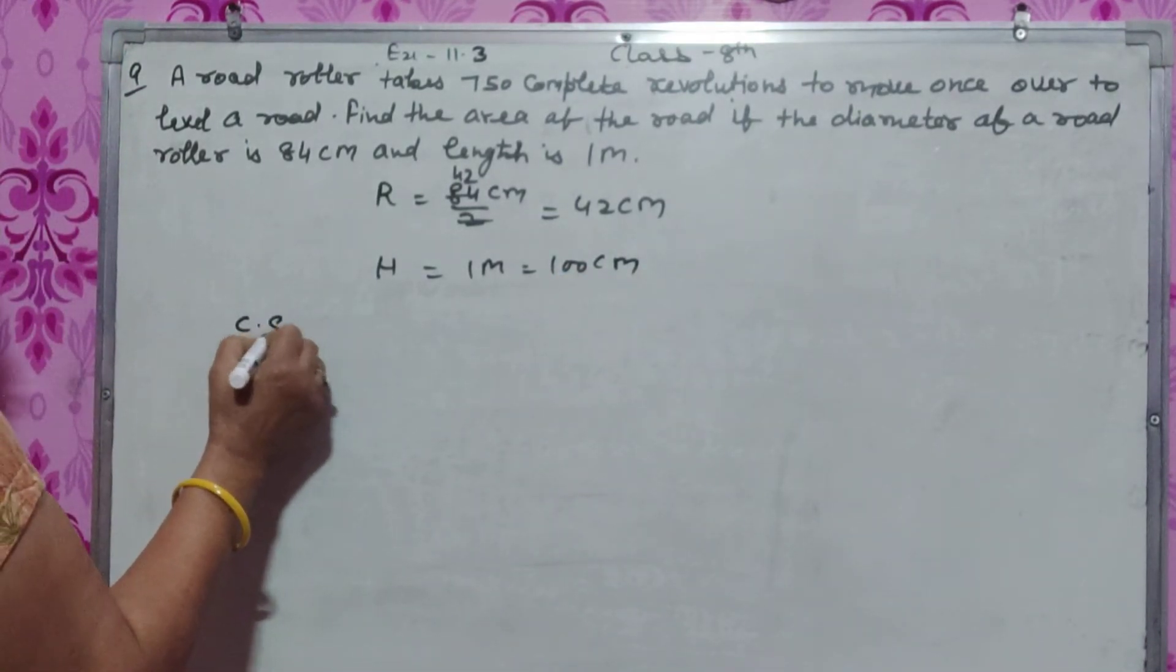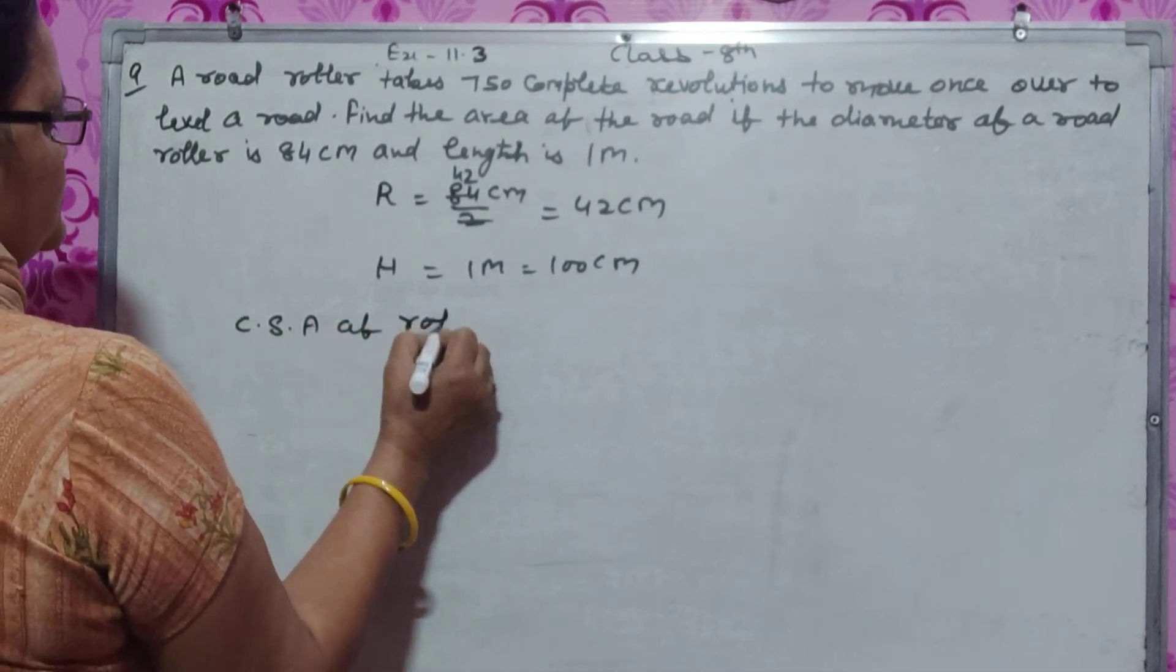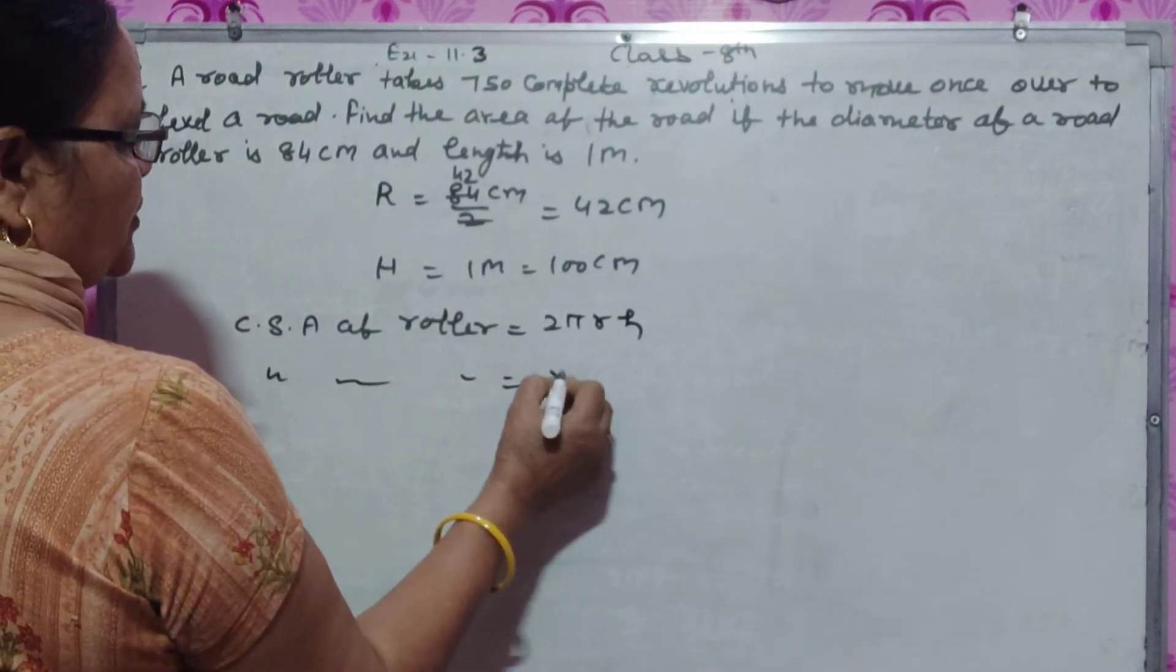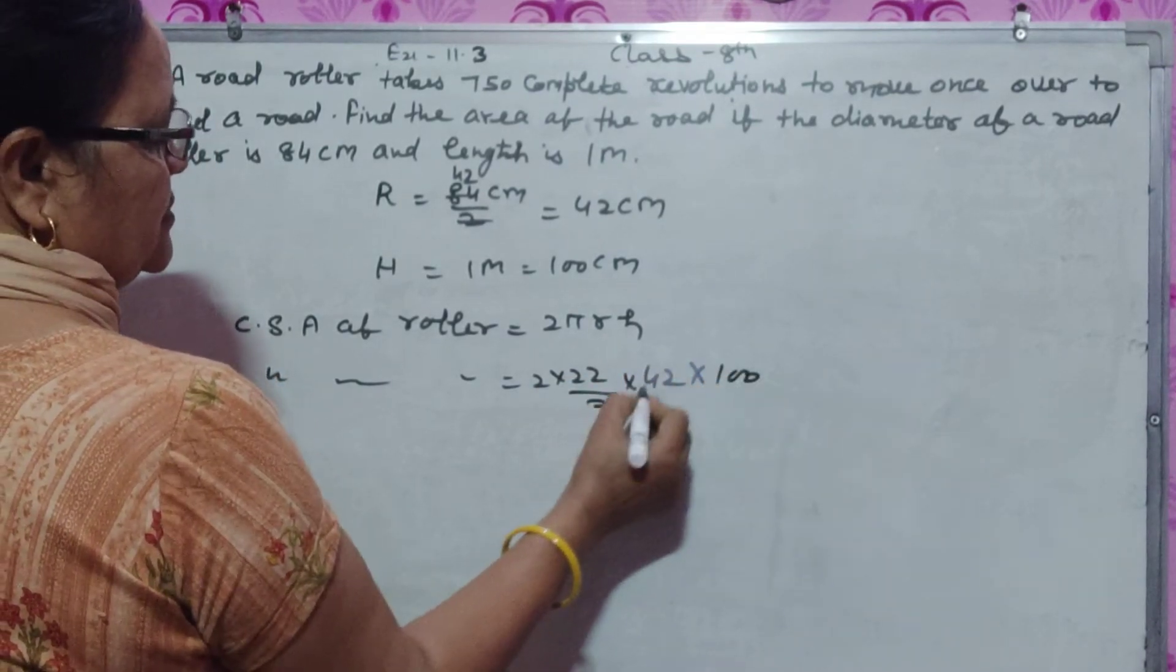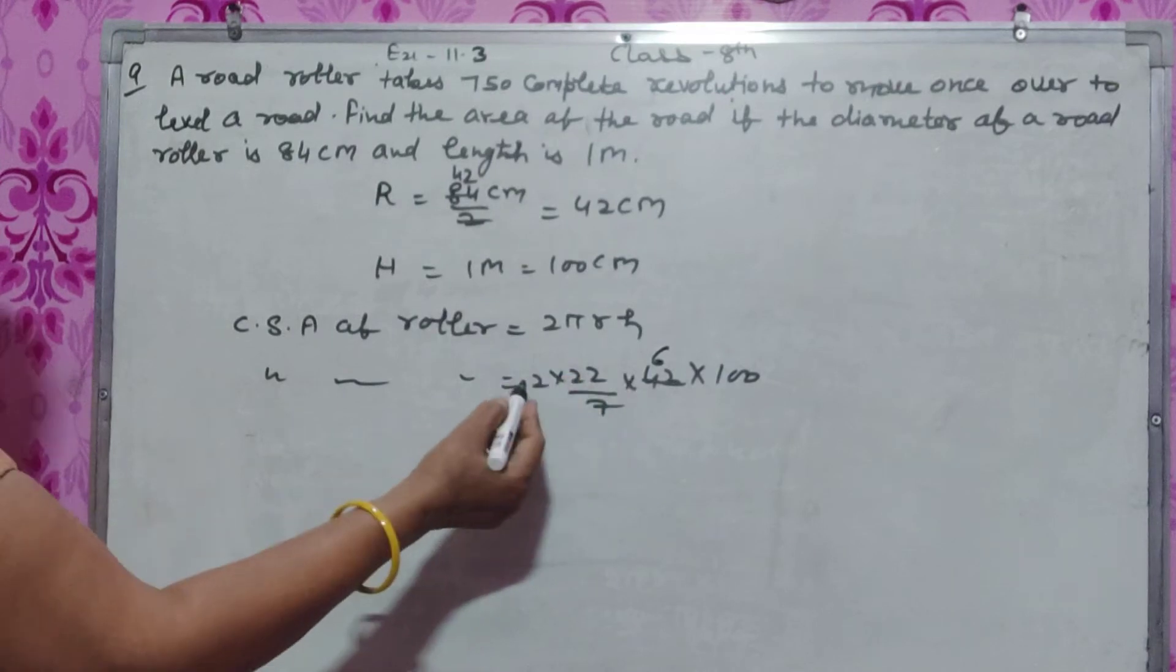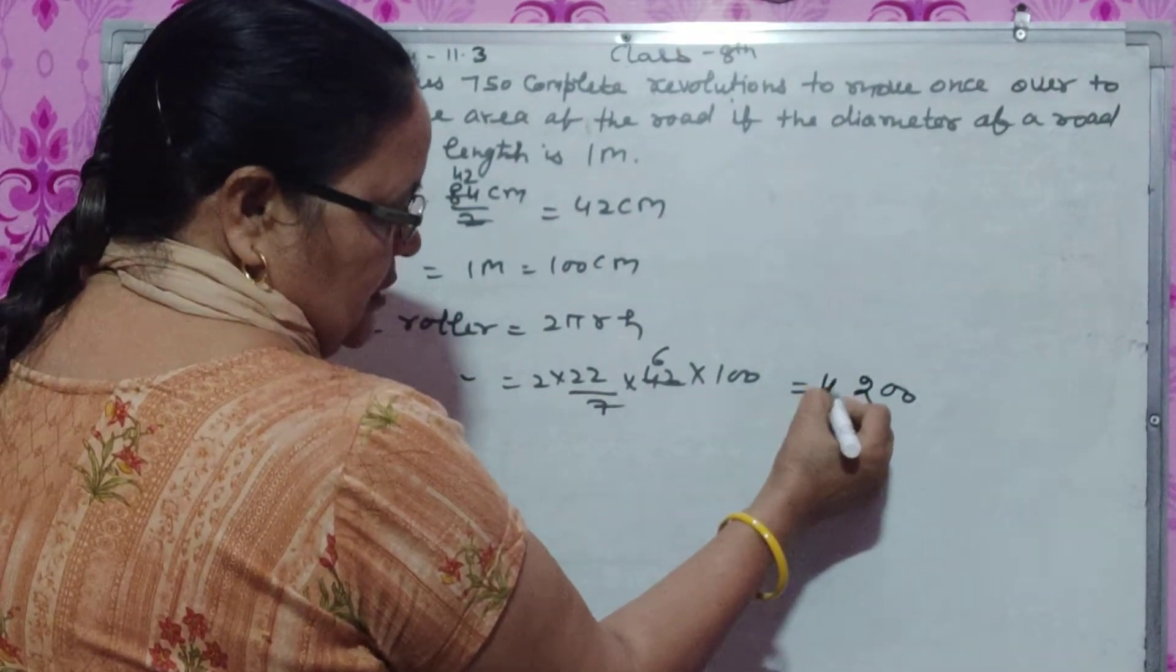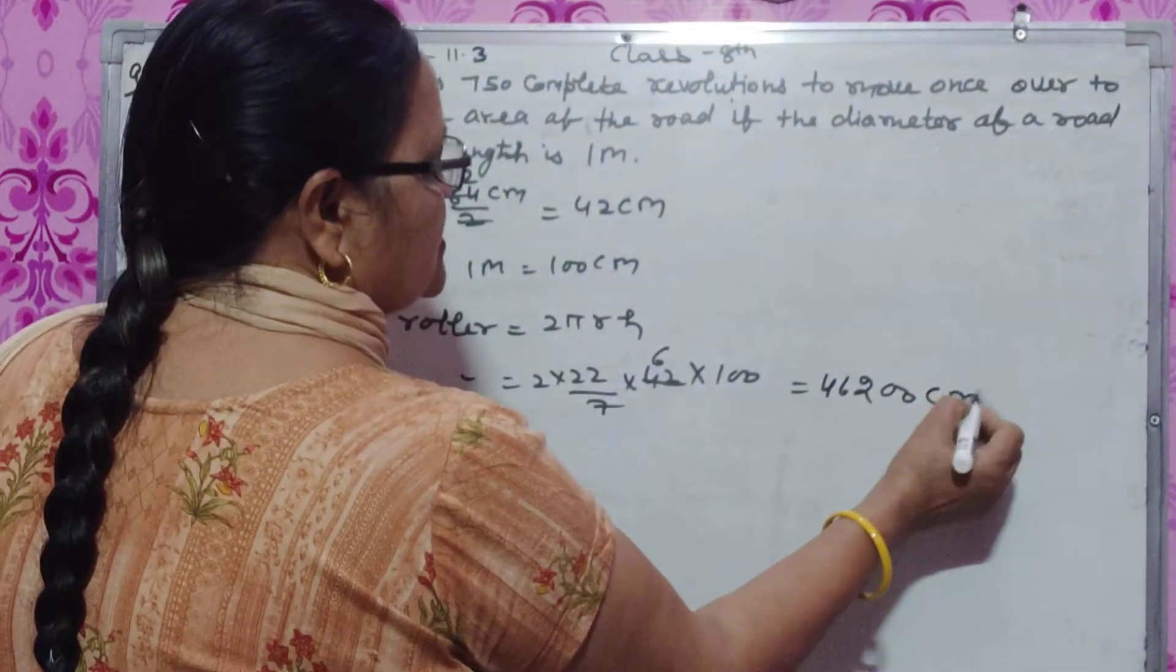The curved surface area of the roller is 2πrh. CSA of roller equals 2 times 22/7 times 42 times 100 cm, which gives us 26,400 cm squared.